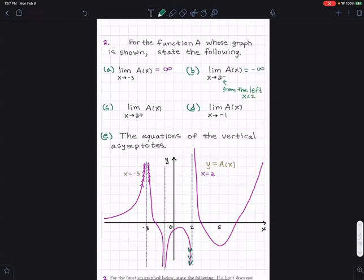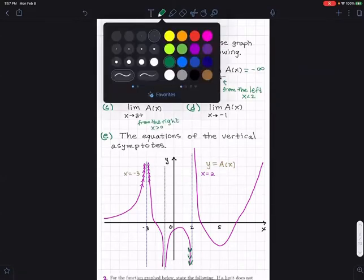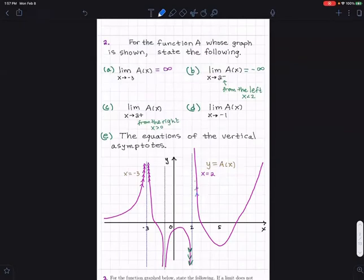Now from the other side, this is from the right because it has a little plus there. From the right means x is greater than two. I come from the other side and it's going up and up—it just keeps getting as large as we want to make that. So that gives infinity. Now I see another asymptote for part (d): x approaches negative one.